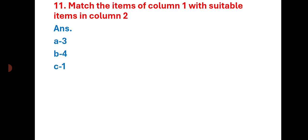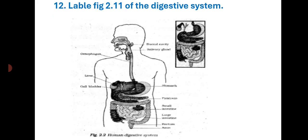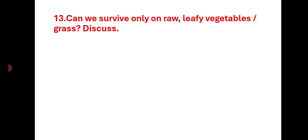The answers for matching Column A to Column B are: A-3, B-4, C-1, D-7, E-5, F-6. Next, a diagram of the digestive system is given for labeling.